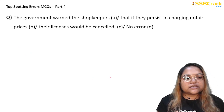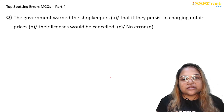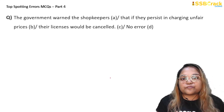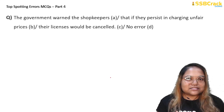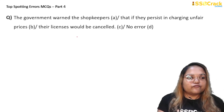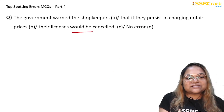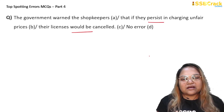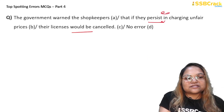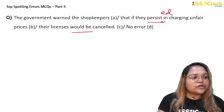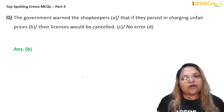Next question: 'The government warned the shopkeepers that if they persist in charging unfair prices, their licenses would be cancelled.' This is a tricky question — you may think D is the answer, but there is an error. The entire sentence is in past tense: 'warned' (past), 'would be cancelled' (past). But in part B, 'persist' is present tense, which is inconsistent. It should be 'persisted' — past tense — to match. Answer: option B.